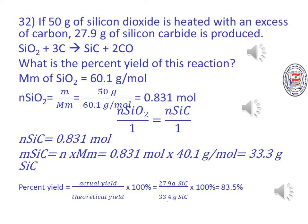Number 32: If 50 grams of silicon dioxide is heated with an excess of carbon, 27.90 grams of silicon carbide is produced. What is the percent yield of this reaction?